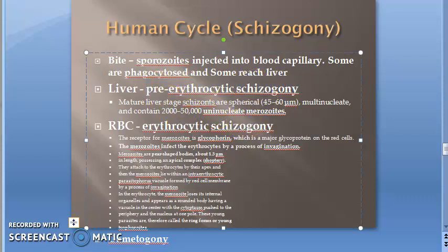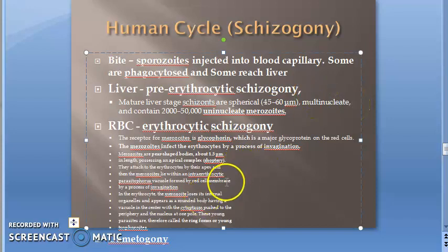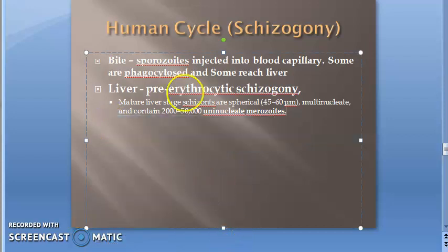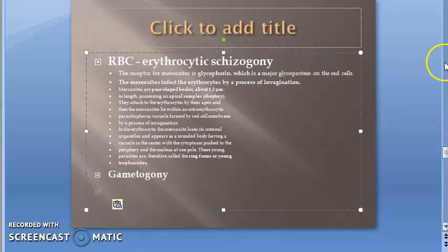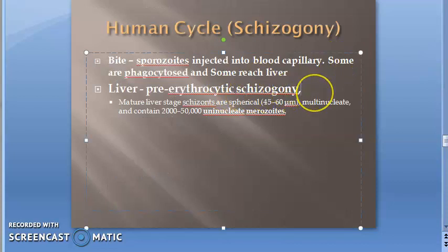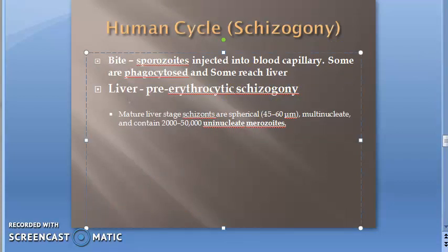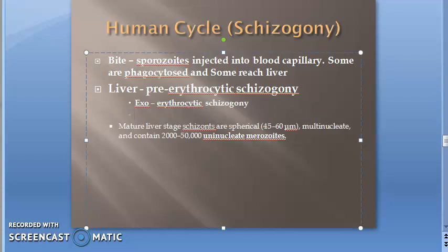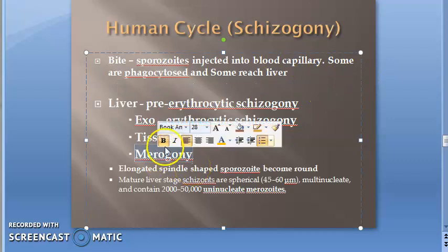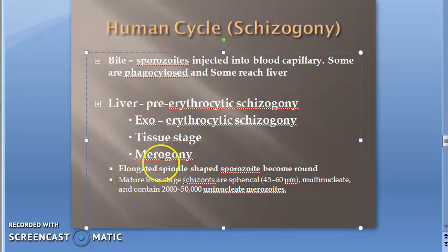In the liver, pre-erythrocytic schizogony occurs. This is also called the tissue stage, exo-erythrocytic schizogony, exo-erythrocytic stage, tissue schizogony, or merogony — four names for the same thing. So this liver stage has all of these synonyms you need to know.